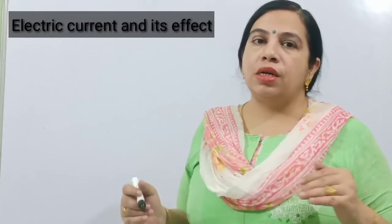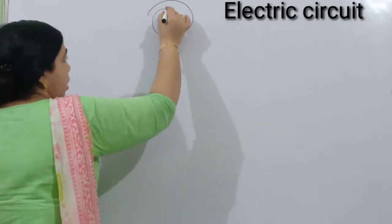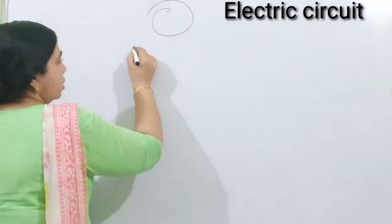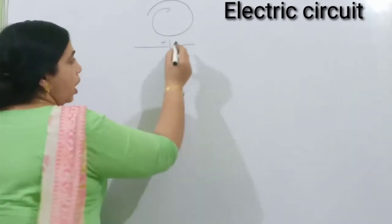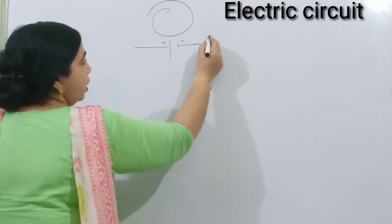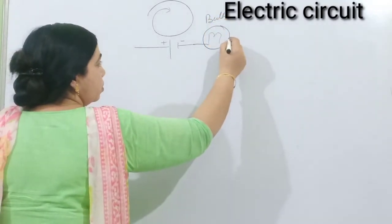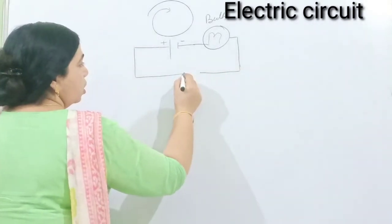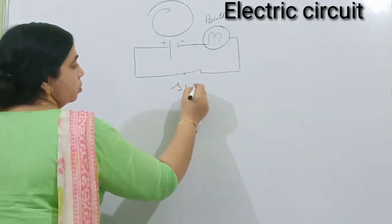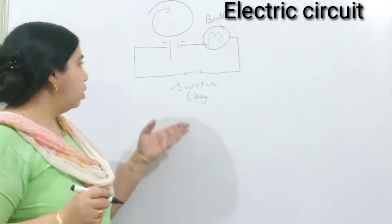Whenever we consider a circuit, circuit means a closed path — a closed path in which current can flow. For an electrical circuit there must be a closed path, and there must be a battery. This long wire is positive and this is negative. After that, there must be any electrical appliance — I am connecting a bulb now. And then there must be a switch, or we can say a key, which can be closed or open.